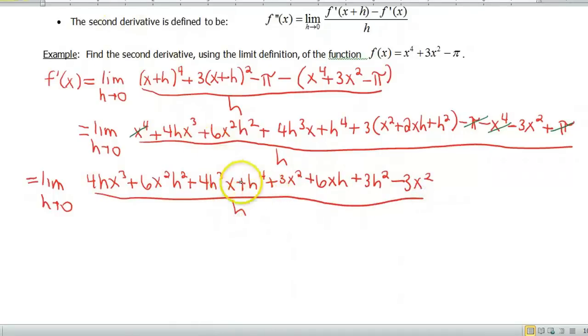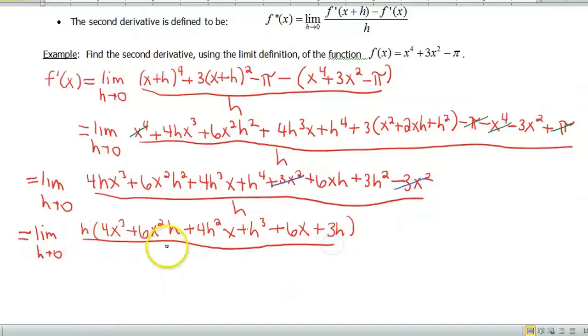Then all of this craziness is divided by h. Okay, I think I see one more piece I can cancel, and that's my 3x squareds. And just to save ourselves a little bit of work here, and again, hopefully you've had the practice with these, so you can understand what I'm doing. But again, you should notice that all, let's see, 1, 2, 3, 4, 5, 6 terms that we have left, all have an h in them. So let's factor that out. So that leaves us with 4x cubed plus 6x squared h plus 4h squared x plus h to the third plus 6x plus 3h.